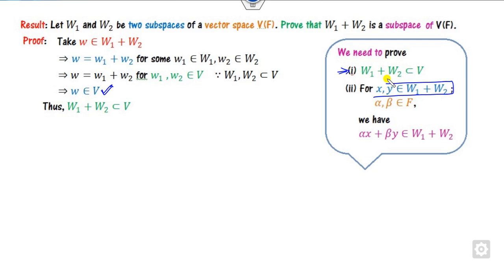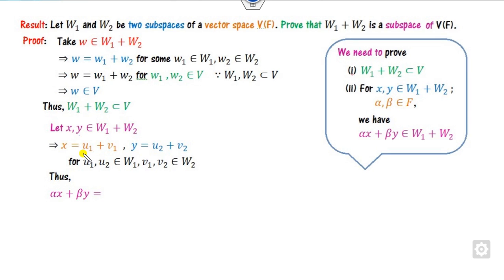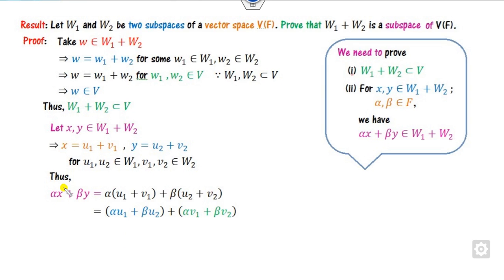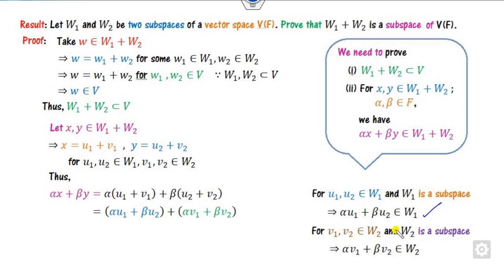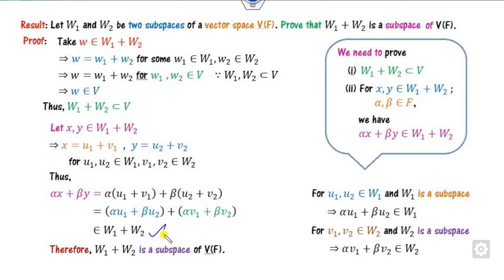For the second property, take two elements x and y in the linear sum. x equals u1 plus v1 where u1 belongs to w1 and v1 belongs to w2, and similarly for y. Our target is to show that αx + βy belongs to the linear sum. Substituting, we show this part belongs to w1 and this part belongs to w2 — since u1 and u2 belong to w1 which is a subspace, their linear combination also belongs to w1. Similarly for w2. So by the definition of the linear sum, it becomes a subspace.